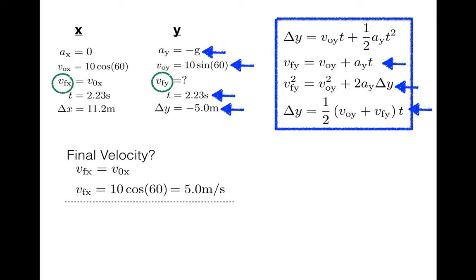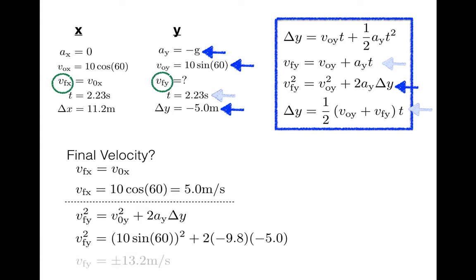Since I found Δt in the last problem, well, in two problems ago, I'm going to try to avoid using Δt, and so looking at these equations, that leaves me with this one. So making the substitutions and solving, we find that vfy is ±13.2 m/s. Now, we know that the object has to be moving down by the time it strikes the ground, and so the -13.2 m/s is the one that we want to choose.